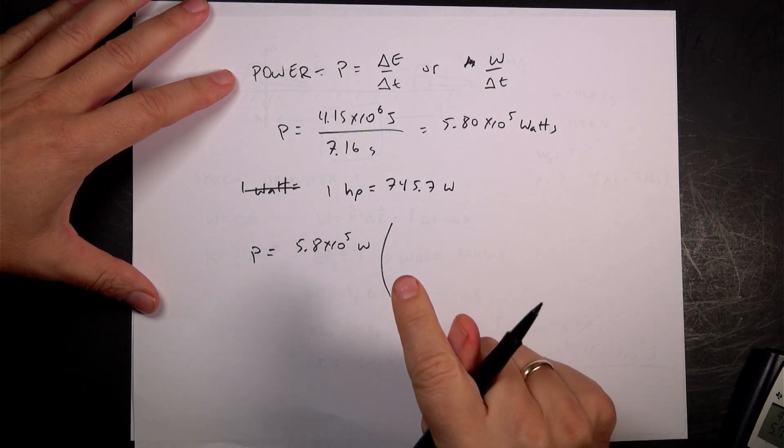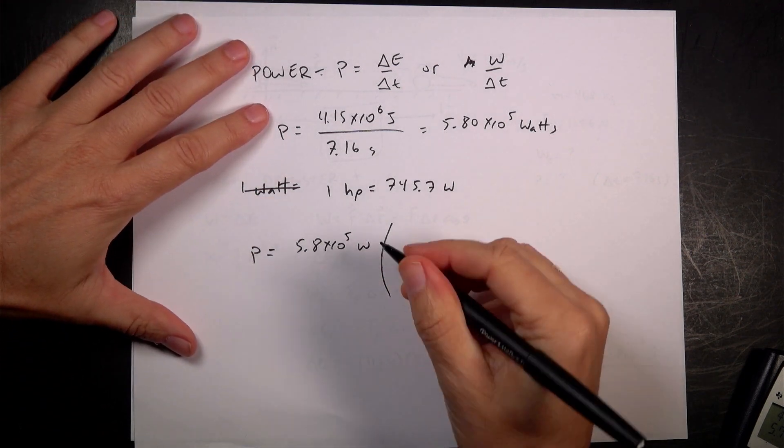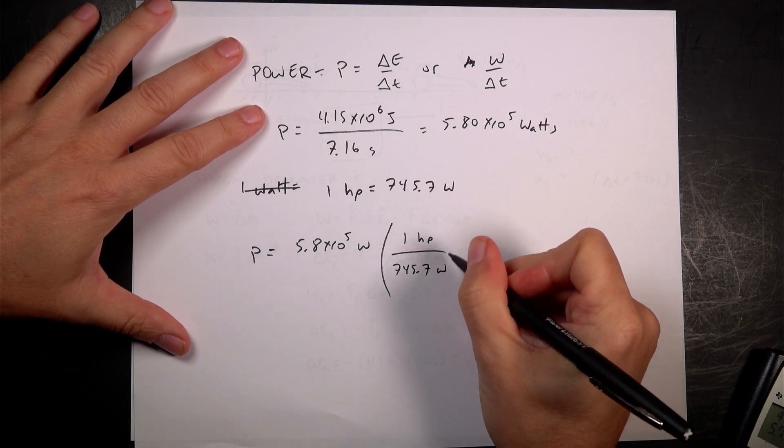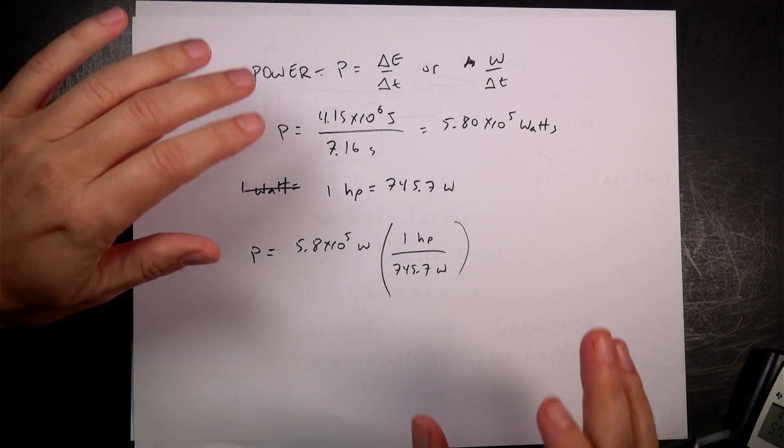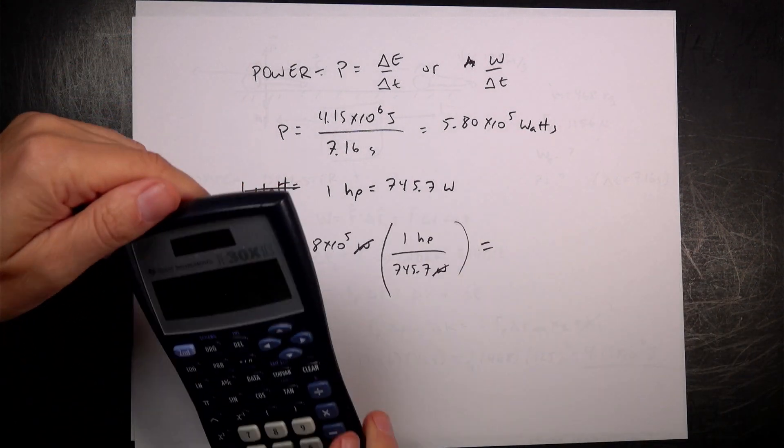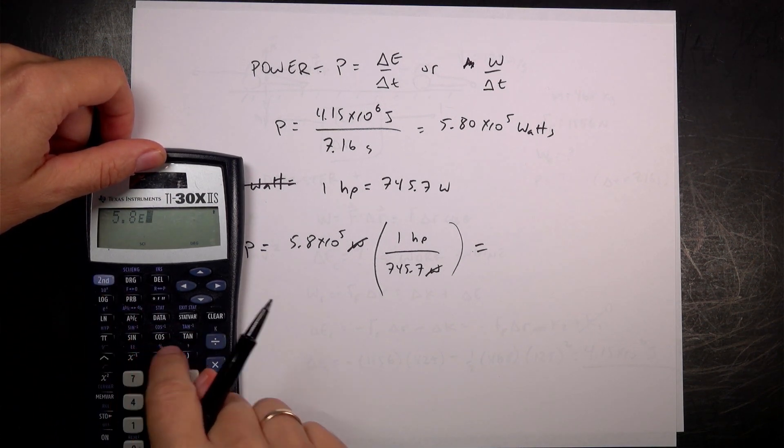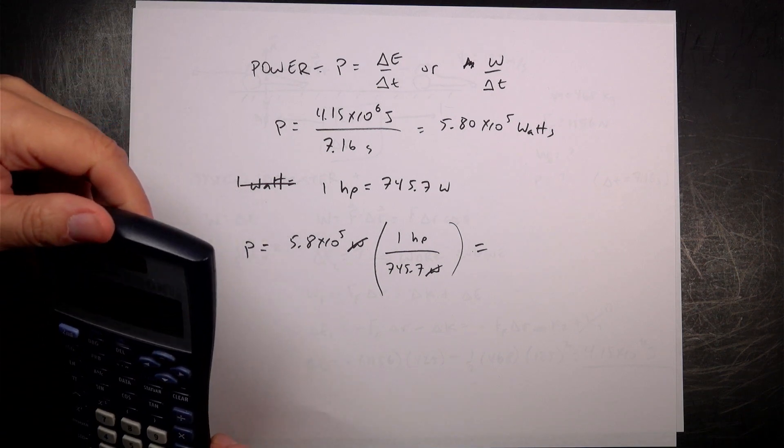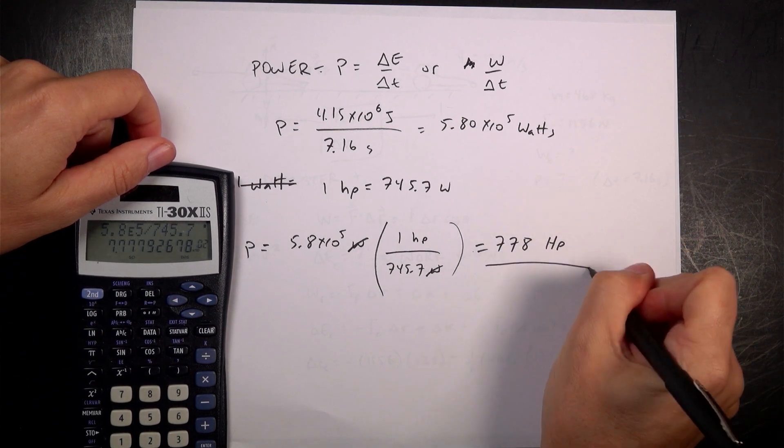I'll multiply that by 1 horsepower divided by 745.7 watts. Since 1 horsepower equals this, this fraction equals 1, so I'm not changing the quantity, just the units. The watt unit cancels and I'll get horsepower. So if I take this number, 5.8 times 10 to the 5th divided by 745.7, I get 778 HP. That's the power in horsepower.